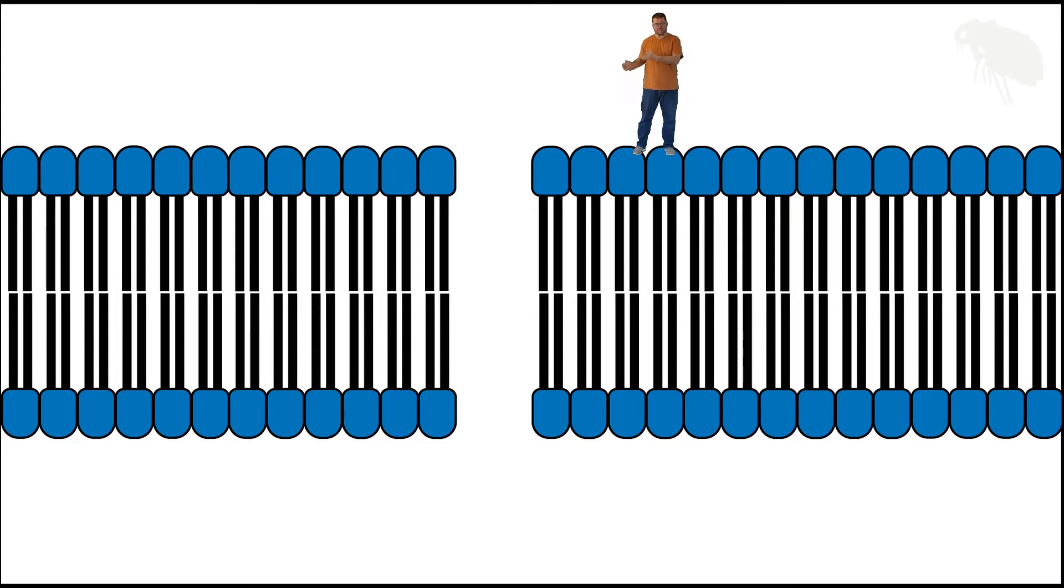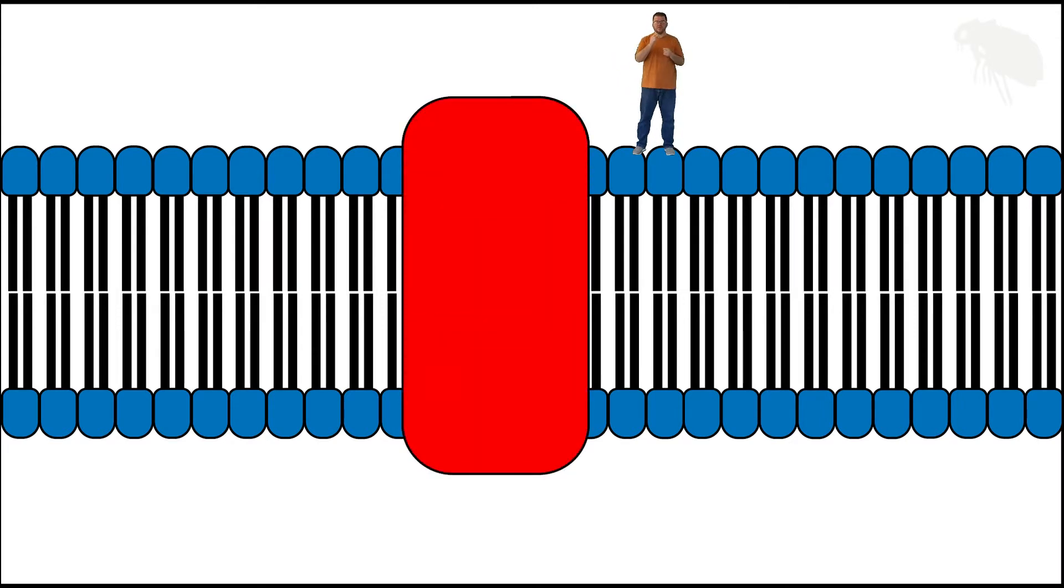Integral membrane proteins like this one. These integral membrane proteins for transport purposes come in a lot of different forms. Here I want to focus on one of the types we talk about very frequently, and that's the channel protein. So to fully appreciate this, let's make the cartoon transparent so you can see its inner machinations.